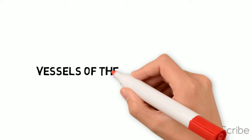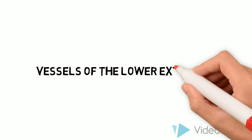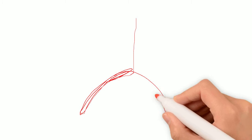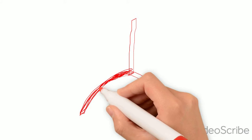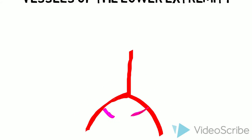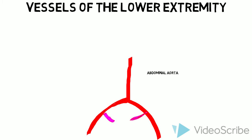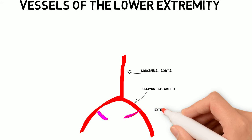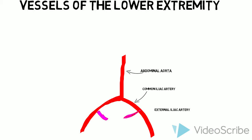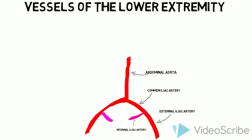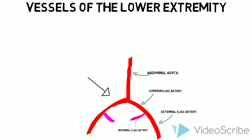This video will show the vessels of the lower extremity, the main vessels, and the path that they travel. We start with the descending abdominal aorta, right here, which splits into the common iliac artery, which further splits into the external iliac artery and the internal iliac artery. This happens on both the right and the left side, so over here you would see these labels also.